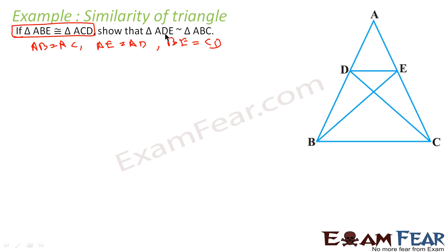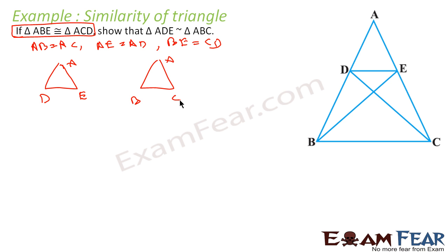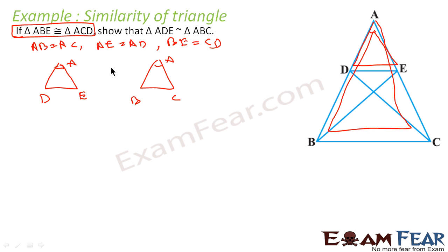We have to prove that triangle ADE is similar to triangle ABC. Let's draw triangle ADE and triangle ABC. If you see, angle A is common in both triangles. So if we can also prove that the sides around angle A are proportional, the triangles will be similar by SAS.